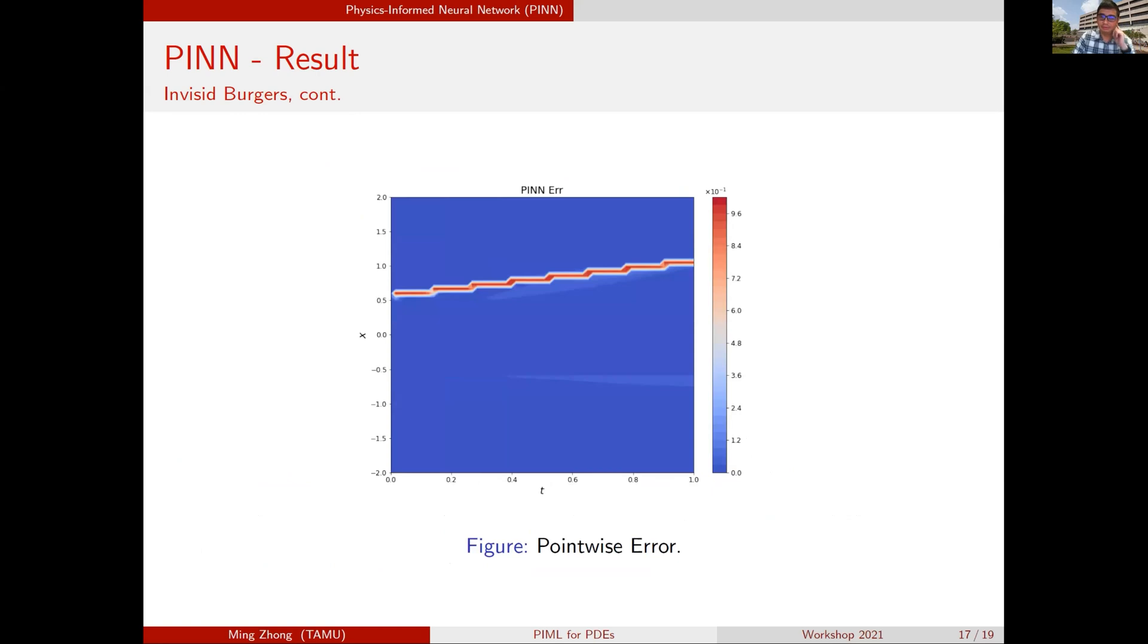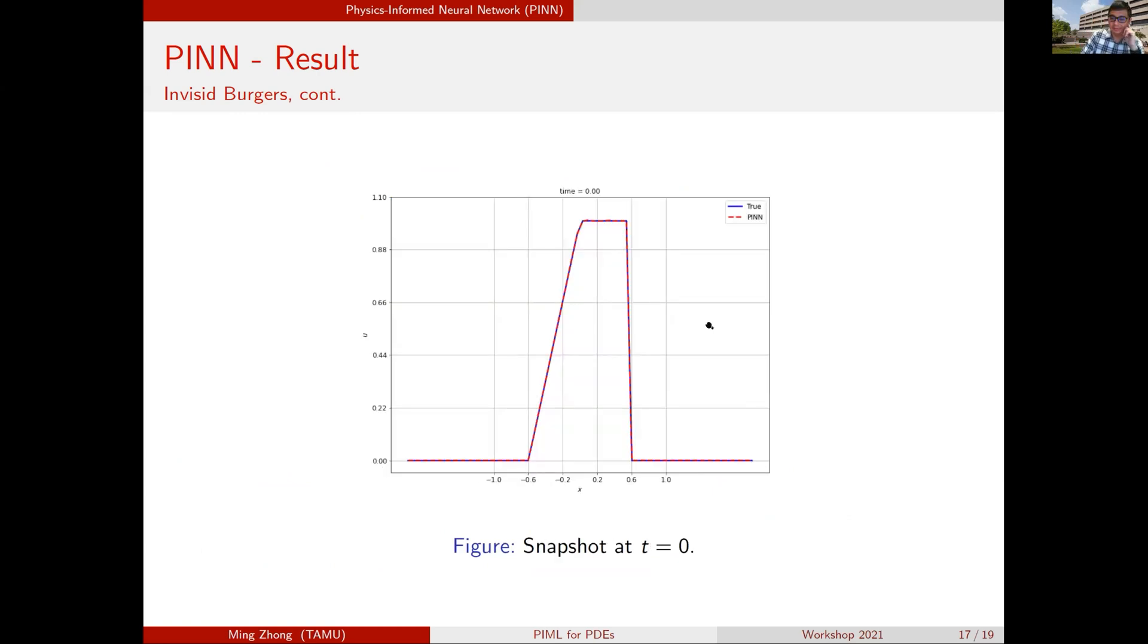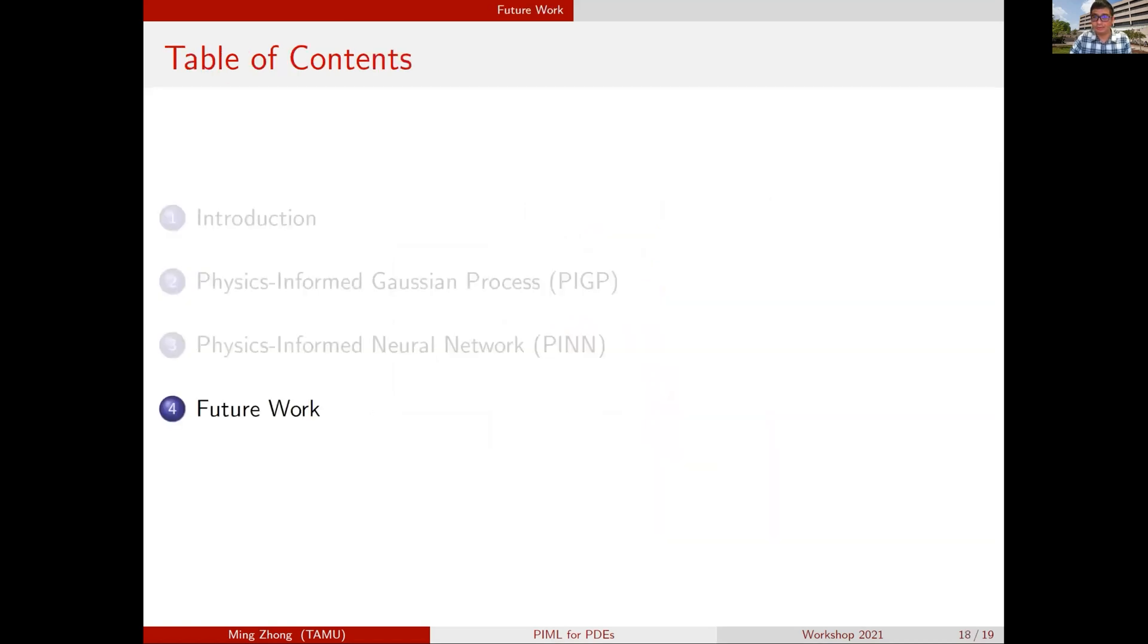We're getting 10 to negative 1 error from this example. Here's a snapshot of the solutions. The red one is the PINN solution, the blue one is true solutions. We capture the initial condition really well, even with a sharp transition. We lack a little bit of the shock as time moves on, but we can capture the rarefaction really well. As you add more physical condition to the PINN solutions, you can actually capture the hyperbolic conservation law, solution of hyperbolic conservation law.